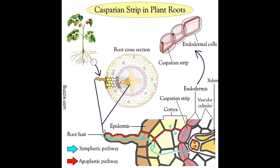In the single-celled layer called the endodermis, all cells show a peculiar thickening in their radial and transverse cell walls — on all walls except those facing the central axis and those facing the root surface. This ring-like corky band, called the Kasparian strip, is composed of impermeable substances like lignin and suberin, while ordinary cell walls are made of cellulose. This strip is closely attached to the endoderm plasma membrane to ensure it does not come apart when the cell shrinks or expands due to osmosis.